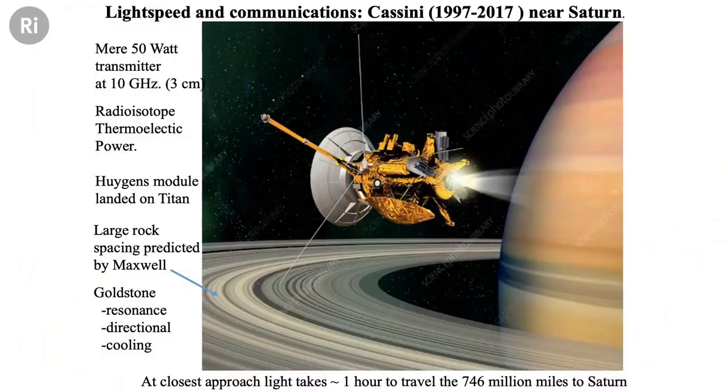I want to say something about the spacecraft here because I think it is just fantastic. Cassini was named after the head of the observatory — named after Roma's boss.